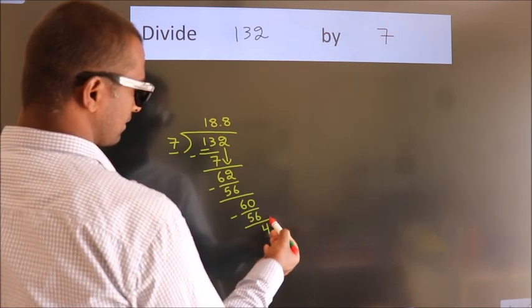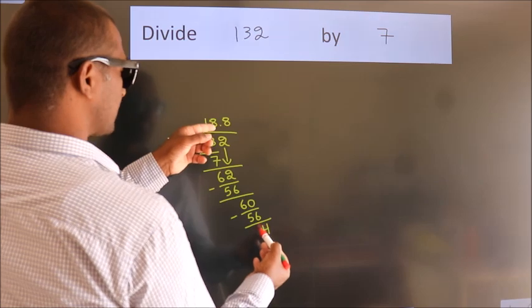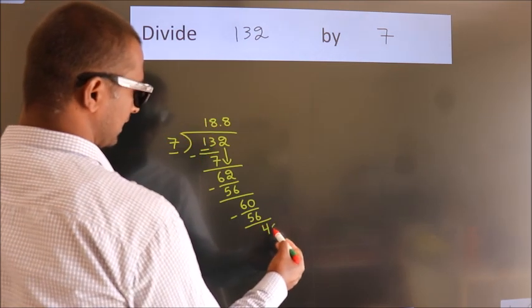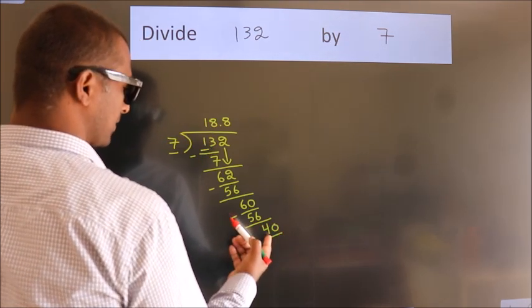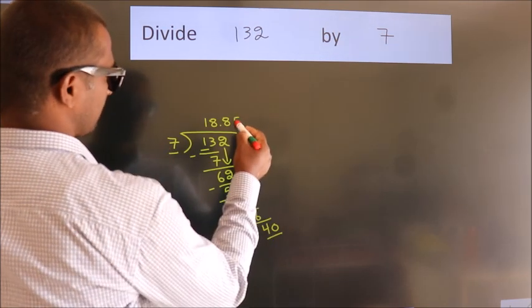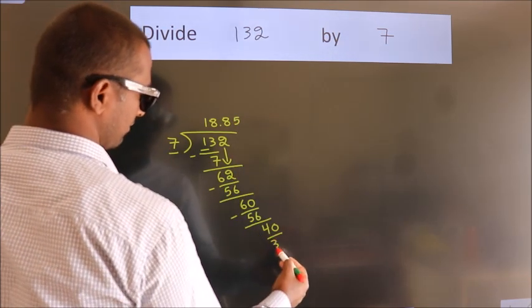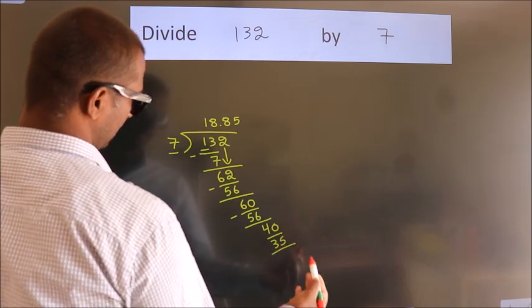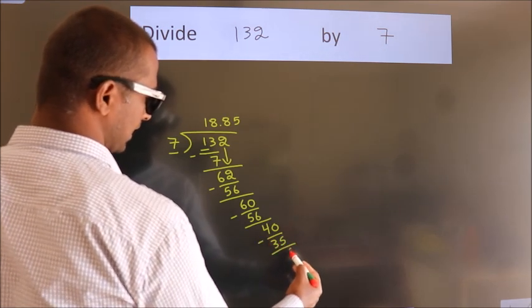After this, we already have the decimal, so directly take 0. So 40. A number close to 40 in the 7 table is 7 times 5 equals 35. Now we subtract. We get 5.